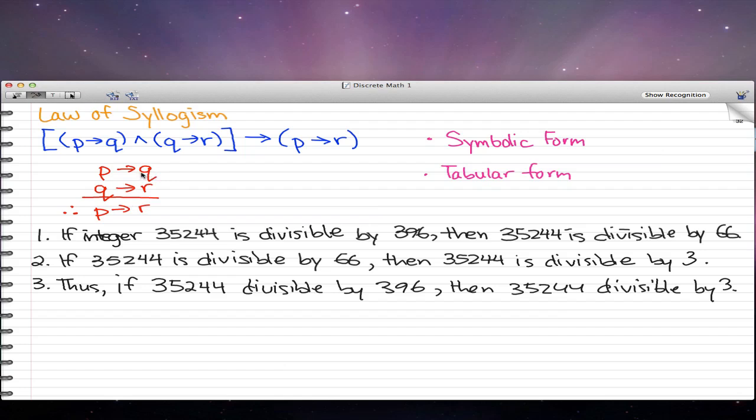What's happening is we're actually just getting rid of the Qs, because since P implies Q and Q implies R, we could just get rid of the middleman and just make it so that P implies R.